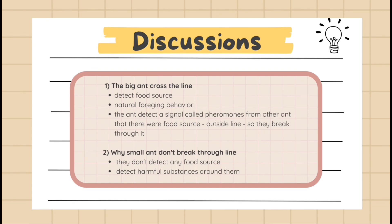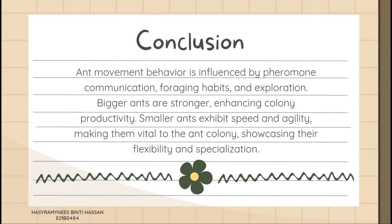For the small ant, the results show that the small ant does not cross the line. This may be because they don't detect any food sources, or because they detect a harmful substance around them — which is why the small ants do not cross the line. In conclusion, ant movement behavior is a complex and fascinating phenomenon influenced by a number of variables. Ants move in an efficient and coordinated manner due to their pheromone communication.